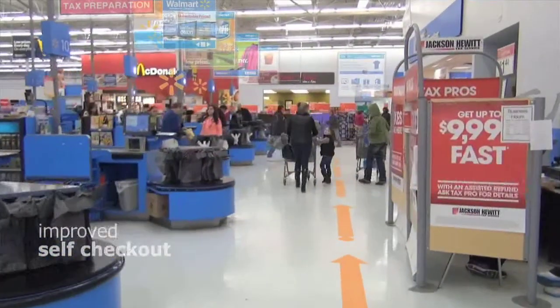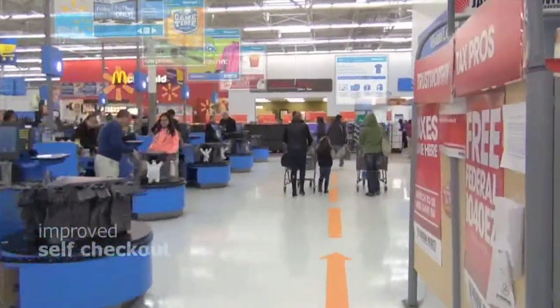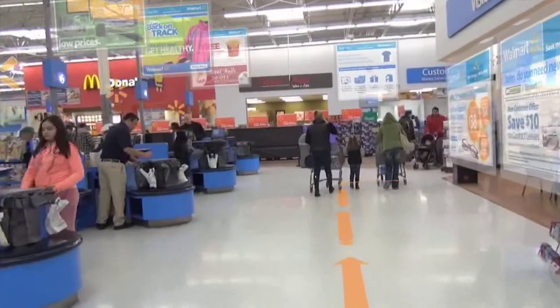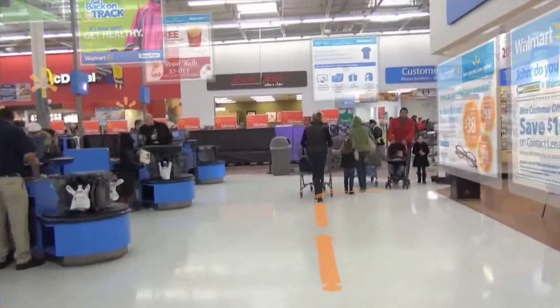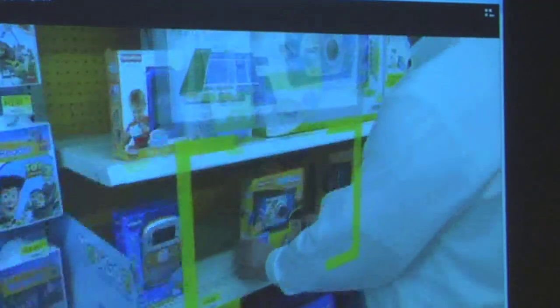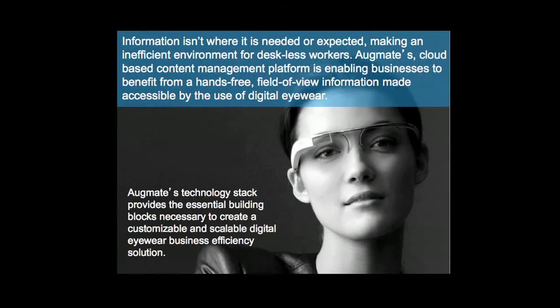It's essentially using digital eyewear to place virtual information in the physical world. This is highlighting a bit about on-shelf availability, which is very important to them. If the inventory isn't on their shelves, we can't sell it. The problem that we solve is that information isn't where it's needed or expected. This creates an inefficient environment for deskless workers and people in the field.